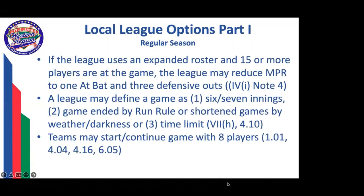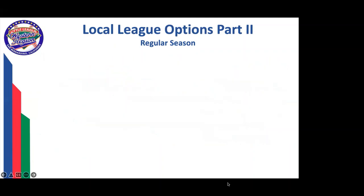Local league options — there are 13 that the board of directors must consider. First, if you have an expanded roster with 15 or more players at the game site, the league may reduce the mandatory play requirement to only three defensive outs along with one at-bat. There's also an added time limit allowing a complete game at one hour and 45 minutes. A team can play with eight players, and the board must decide whether the ninth spot in the order will be an out or a batted position.